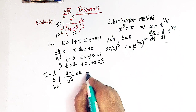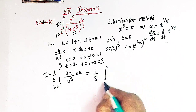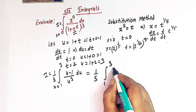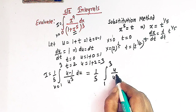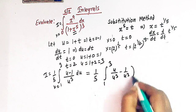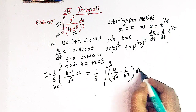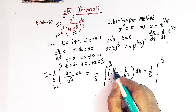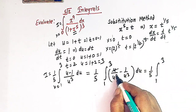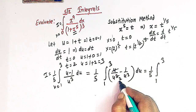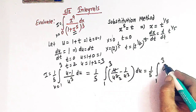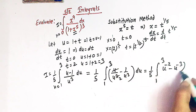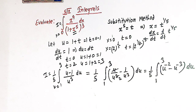We can now write 1 over 5 times the integral from 1 to 3. We separate the two terms by writing u over u cubed minus 1 over u cubed du. So u over u cubed simplifies to 1 over u squared, which is u raised to minus 2, and 1 over u cubed is u raised to minus 3. So we have 1 over 5 times the integral from 1 to 3 of u raised to minus 2 minus u raised to minus 3, du.